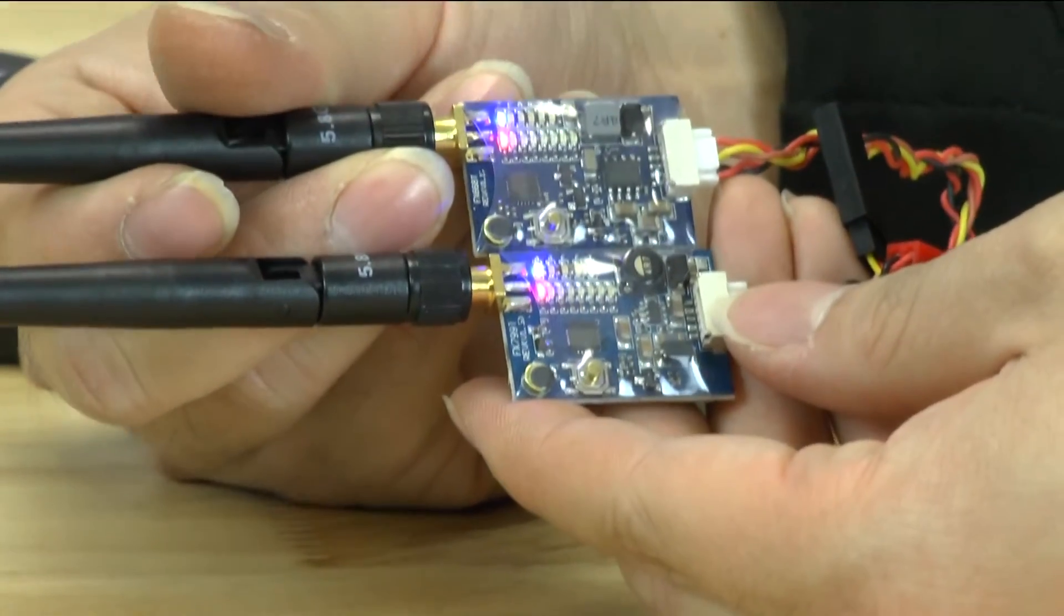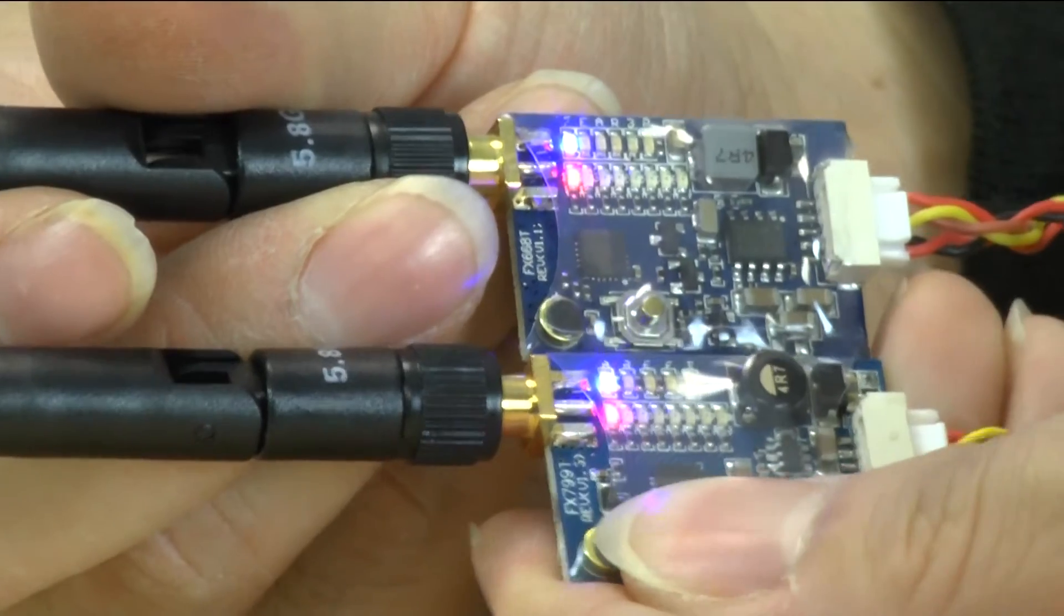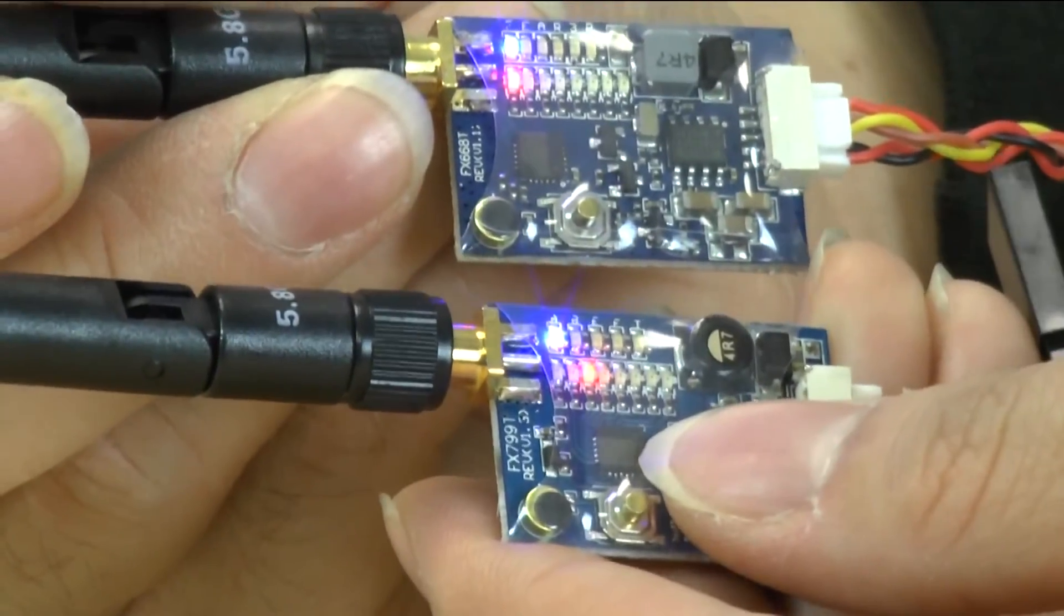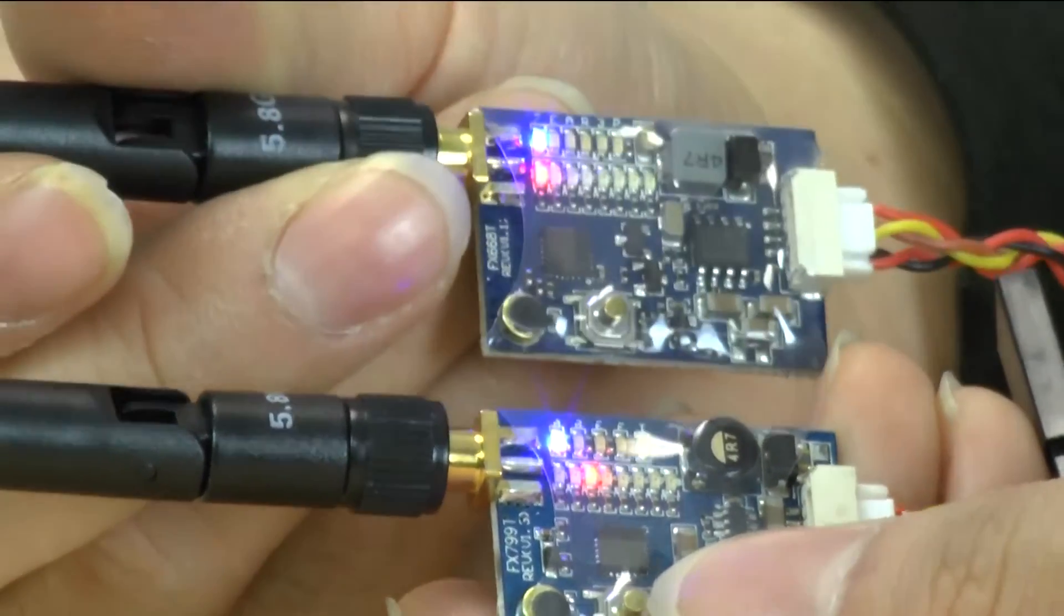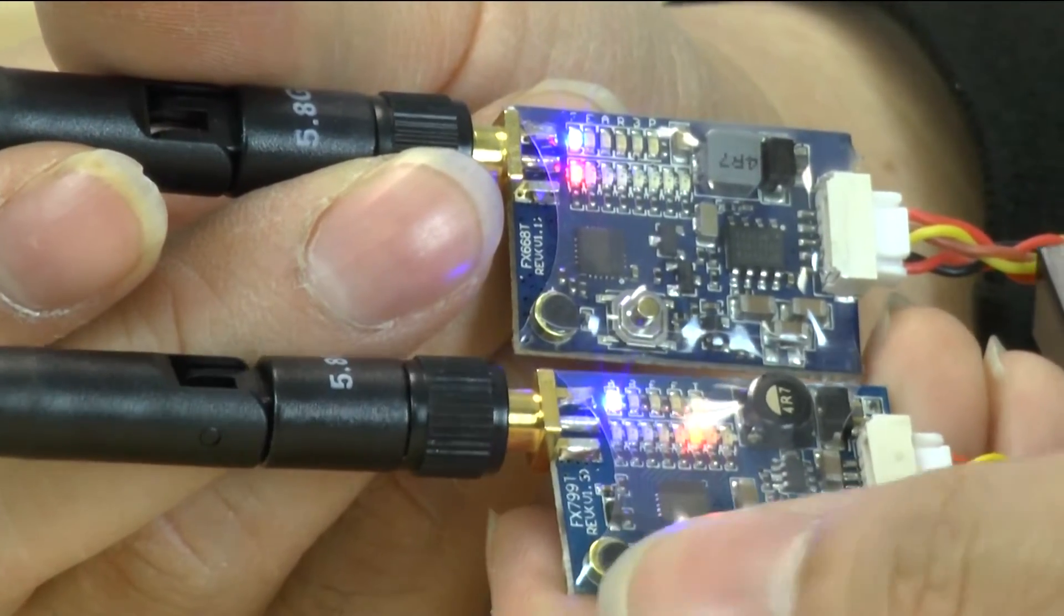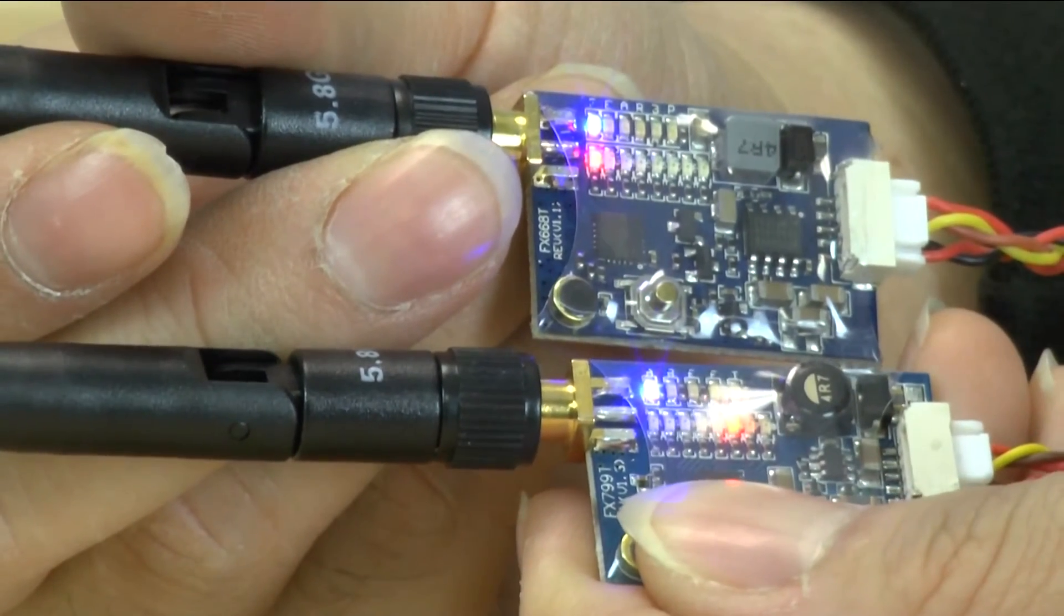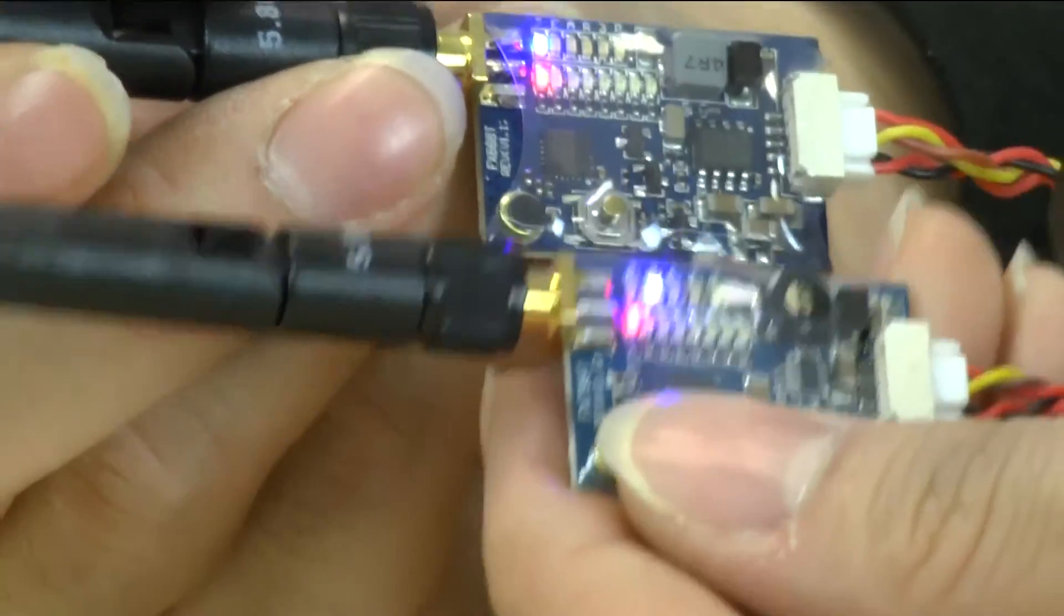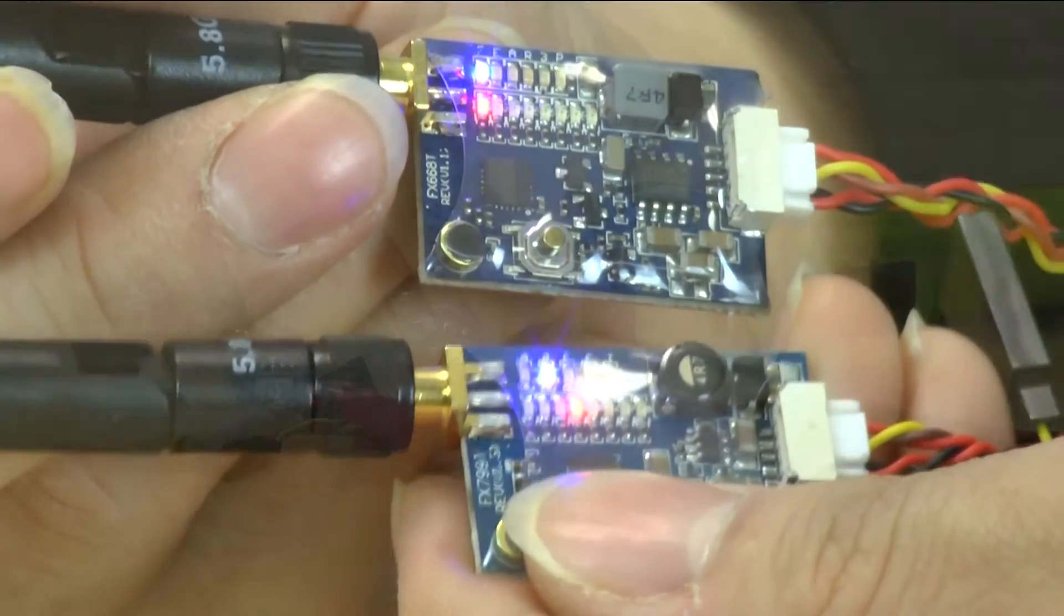So as you can see when we plug it up the LEDs look very similar. On this one when you push, a light push to the button, this is the FX799T without the RF on off switch. A quick press will allow you to go through all the channels and then in order to change bands you actually push and hold. So doing a double press won't actually do anything for the older version. It'll actually just switch through channels a little bit quicker.